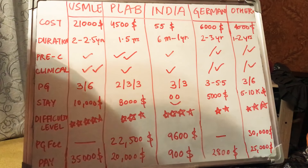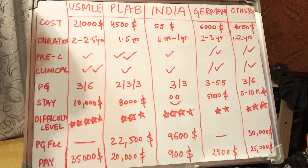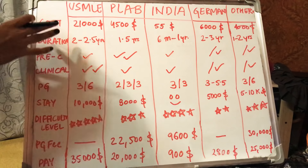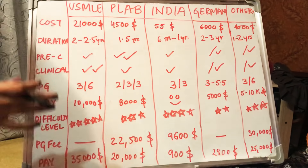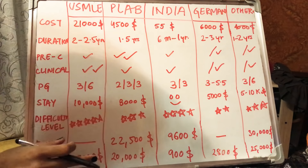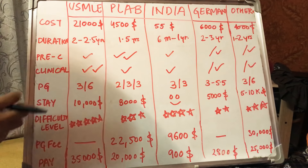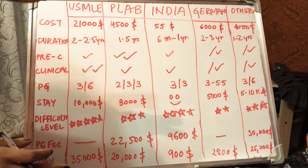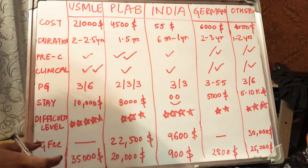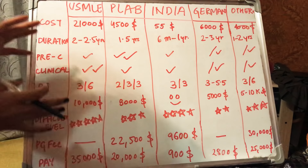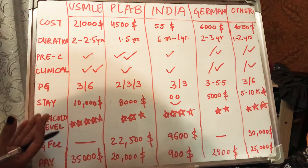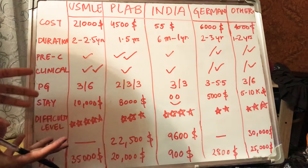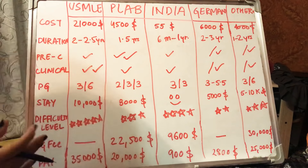Hello everyone, welcome back to my channel. My name is Monu and in this video I'm going to talk about some statistical data related to PG in various parts of the world. I'm going to cover USMLE, PLAB, India, Germany, and other countries — referring to Canada, Australia, or New Zealand — where it is a little difficult to enter the healthcare system since it requires three to five years of clinical experience. This data is from my perspective and my colleagues' experience; I am not responsible for the exact figures — this is estimated data.